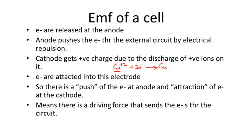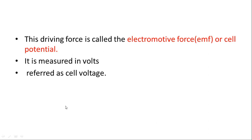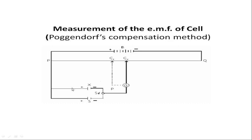Electrons are attracted to the cathode electrode. So there is a push of electrons at the anode and attraction of electrons at the cathode, meaning there is a driving force that sends the electrons through the circuit. This driving force is called the electromotive force — EMF of the cell, or it is called the cell potential. It is measured in volts and is also referred to as the cell voltage.